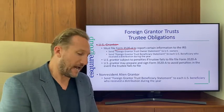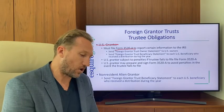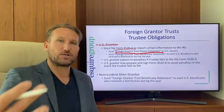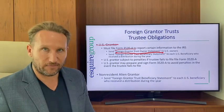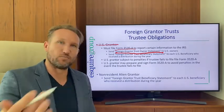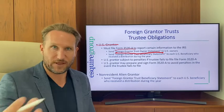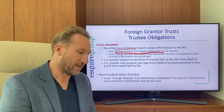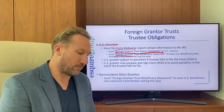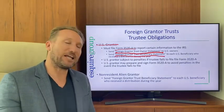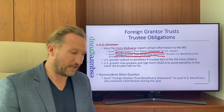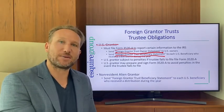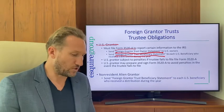The trustee must send a foreign grantor trust owner statement to the U.S. grantor or owner of the trust. If there's more than one U.S. grantor or owner, multiple owner statements must be sent. The trustee also has to send foreign grantor trust beneficiary statements to any U.S. beneficiary who received a distribution — that's what keeps the beneficiary from having to pay tax on the distribution.